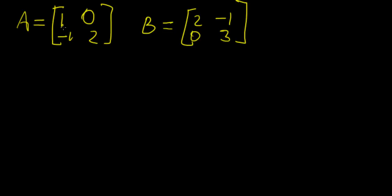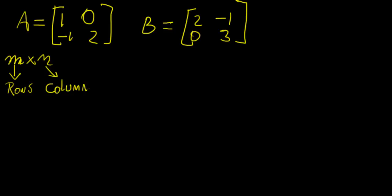How do we denote the dimensions of these matrices? We use something called the M times N notation — M number of rows and N number of columns. So we count the number of rows first. This has two rows and two columns, so that's a two by two matrix. And the same with matrix B, so it has the same dimensions.